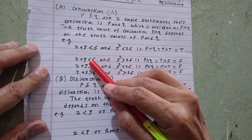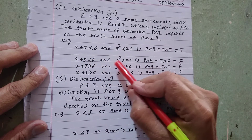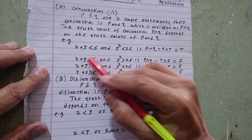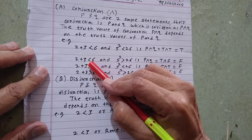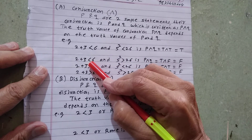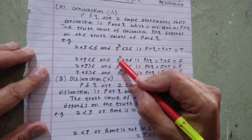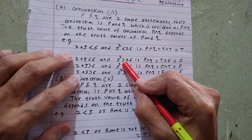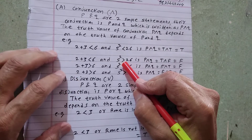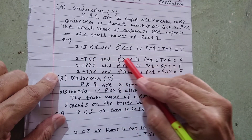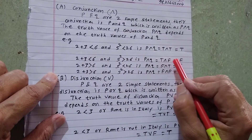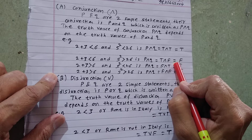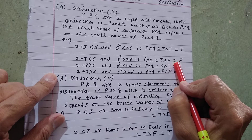Next example: '2 plus 3 less than 6' AND '5 squared greater than 26'. The first part, '2 plus 3 less than 6', is true. But the second part, '5 squared greater than 26', is false. So it is true AND false. Therefore the combined effect of the complete statement is false.